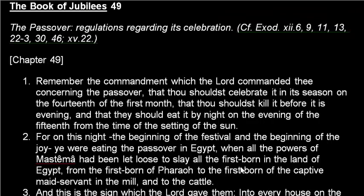Those are the rules in the King James version of the Bible. Now let's jump over to the book of Jubilees chapter 49, which talks about Passover regulations regarding its celebration. Jubilees is another book written by Moses — it's called Jubilees because it talks about the Jubilee years every 50 years. It gives us a lot of the timing of events in that ancient time. Over here at the end in chapter 49 it talks about Passover, and chapter 50 talks about the Sabbath day rules.